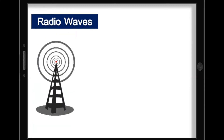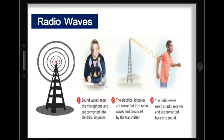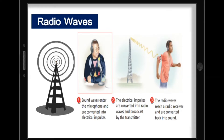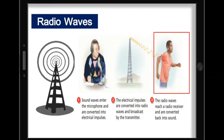Radio waves are a type of electromagnetic radiation best known for their use in communication technologies such as radios, televisions, and mobile phones. In radio communication: first, sound waves enter the microphone and are converted into electrical impulses; next, the electrical impulses are converted into radio waves and broadcast by the transmitter; and lastly, the radio waves reach a radio receiver and are converted back into sound.